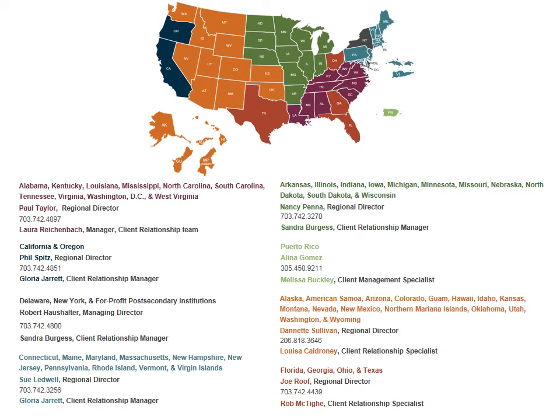Here is the map of the country. Look for the state your institution is in and you'll see the name and phone number of your client relationship manager. Most likely you already know who this person is. Hopefully all of this was very helpful. If you have questions, please reach out. Student Tracker is going to give you some good data for doing your IPEDS outcome measure survey. Thank you all for listening.